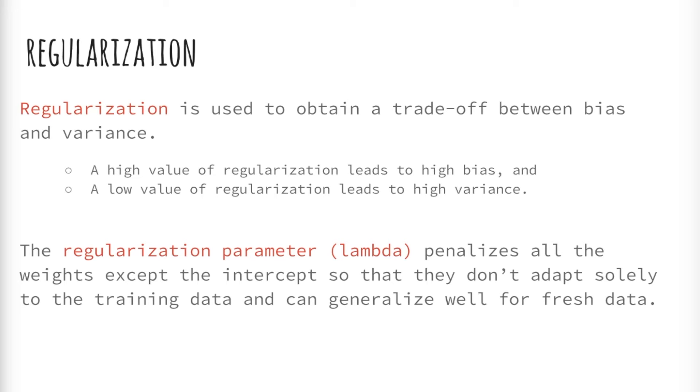Regularization is a modification to the cost function which enables the algorithm to make a tradeoff between model complexity and model accuracy. A high value for regularization leads to high bias, and a low value for regularization leads to high variance. Essentially, the value of regularization is inversely proportional to our model complexity.